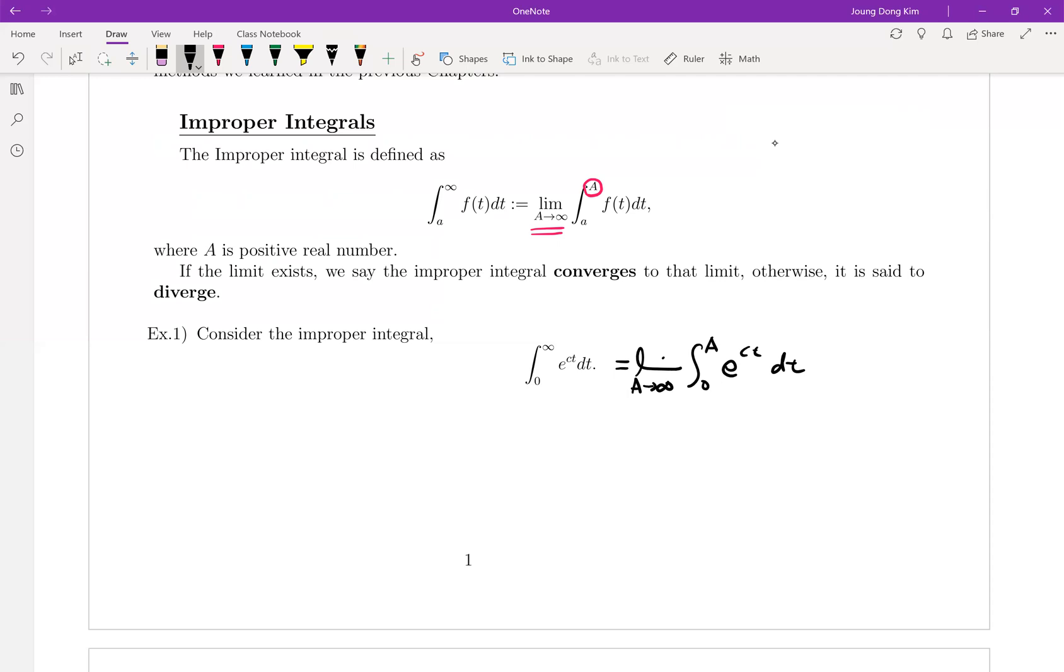Then let me take care of the integral part. It is equal to limit a goes to infinite, and what is the anti-derivative of e to the ct? It is 1 over c, e to the ct, and we're going to use this notation.